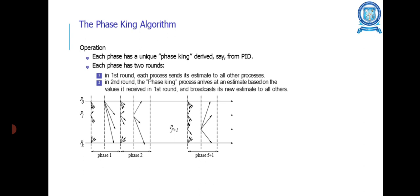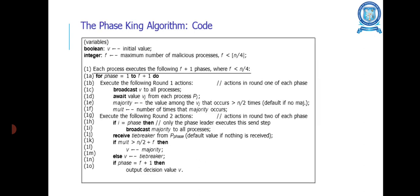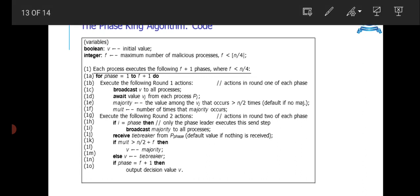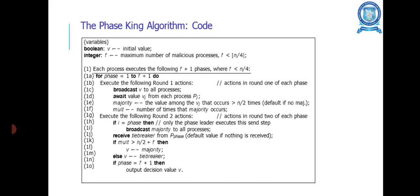The Phase King Algorithm: This algorithm's operation is that each phase has a unique phase king derived from process ID. Each phase has two rounds. In the first round, each process sends its estimate to all other processes. In the second round, the phase king process derives an estimate based on the values it receives in the first round and broadcasts its new estimate to all others. The following figure shows the Phase King algorithm code. Each process executes the following F+1 phases, then executes the following round one actions, followed by round two actions. Based on these two steps, this algorithm is working.